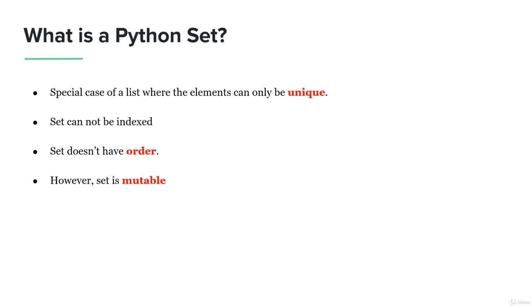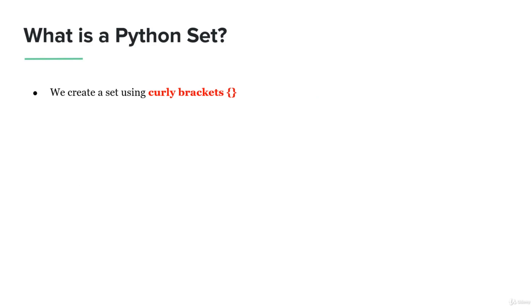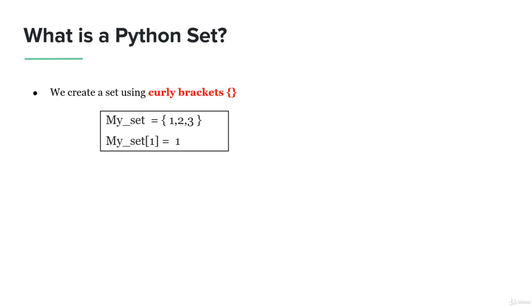First, let's understand how we can create a set. We create a set using the curly brackets. For lists we use square brackets, for tuples we use circular brackets, for dictionaries we use curly brackets, and now for the set we also use curly brackets. What differentiates the set from the dictionary is that in the dictionary we had key-value pairs with the colon operator, whereas here we don't have a colon. So the set is very similar to the list, but with curly brackets instead of square brackets.